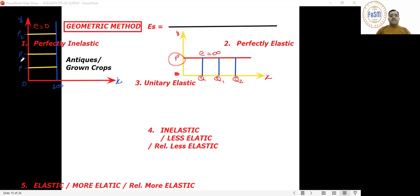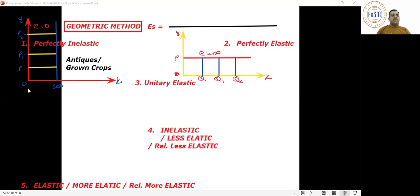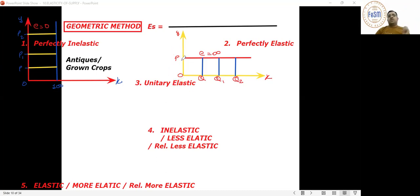If the price drops even a little, the seller leaves because he was already doing business at the least profit. Selling the commodity at anything less than price OP will make him suffer a loss. So at price OP, sell as much as you want, but if price falls even slightly, the seller exits the market.